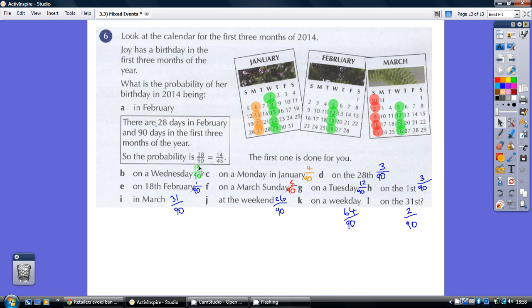So Wednesdays? There are 13, they're the green ones. Mondays in January? There are four. The 28th? Well, we've got three of them. 18th of February? Well, there's just the one of it, and so on. Just work your way through, and those are the answers we get.